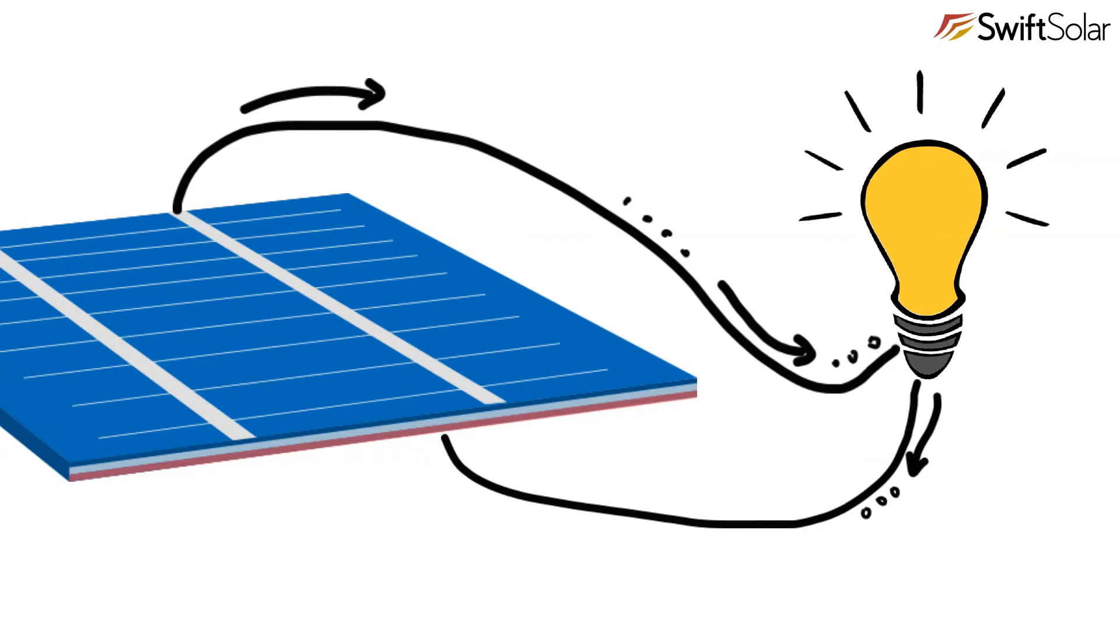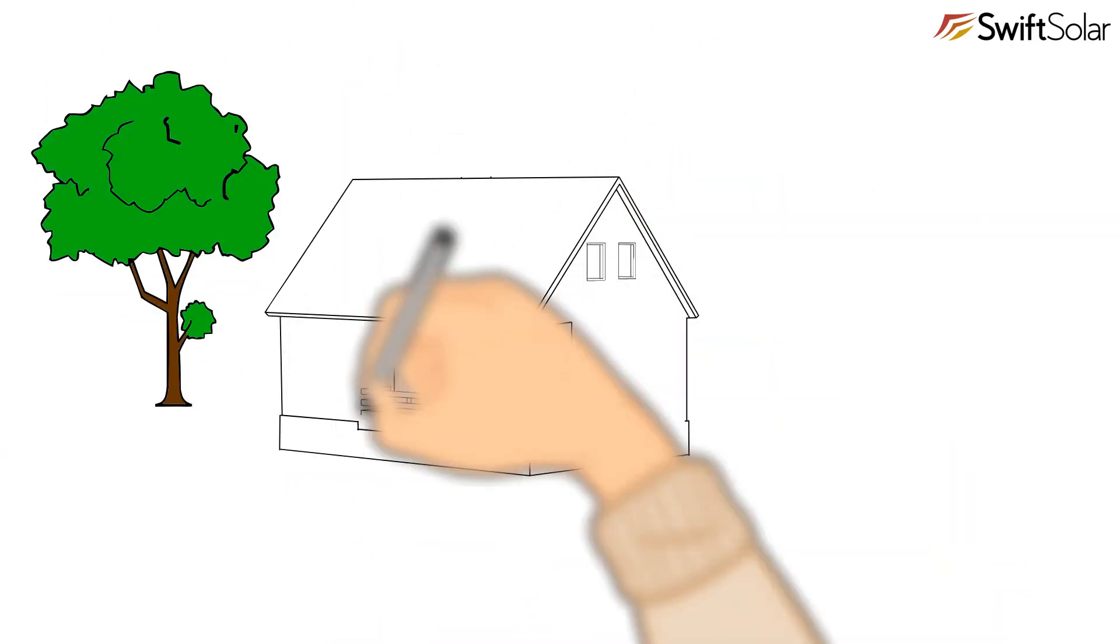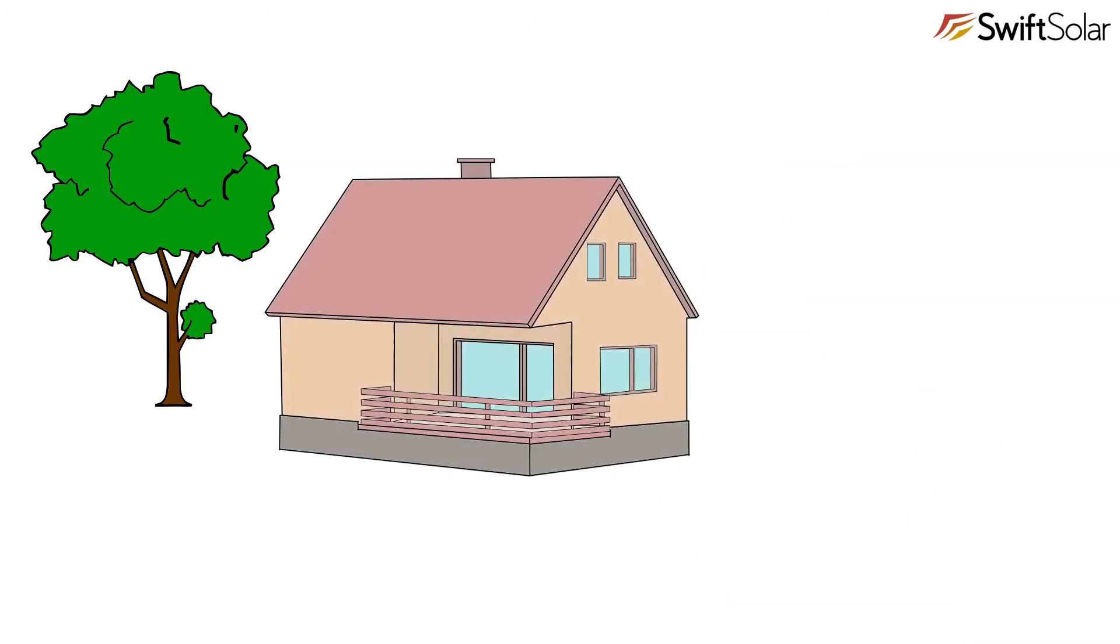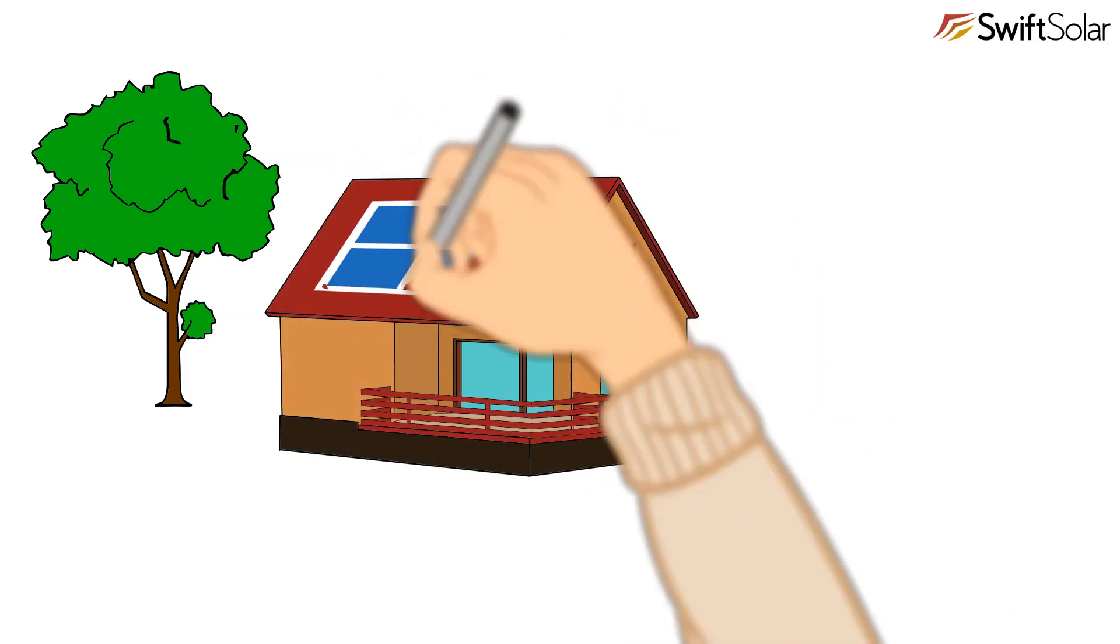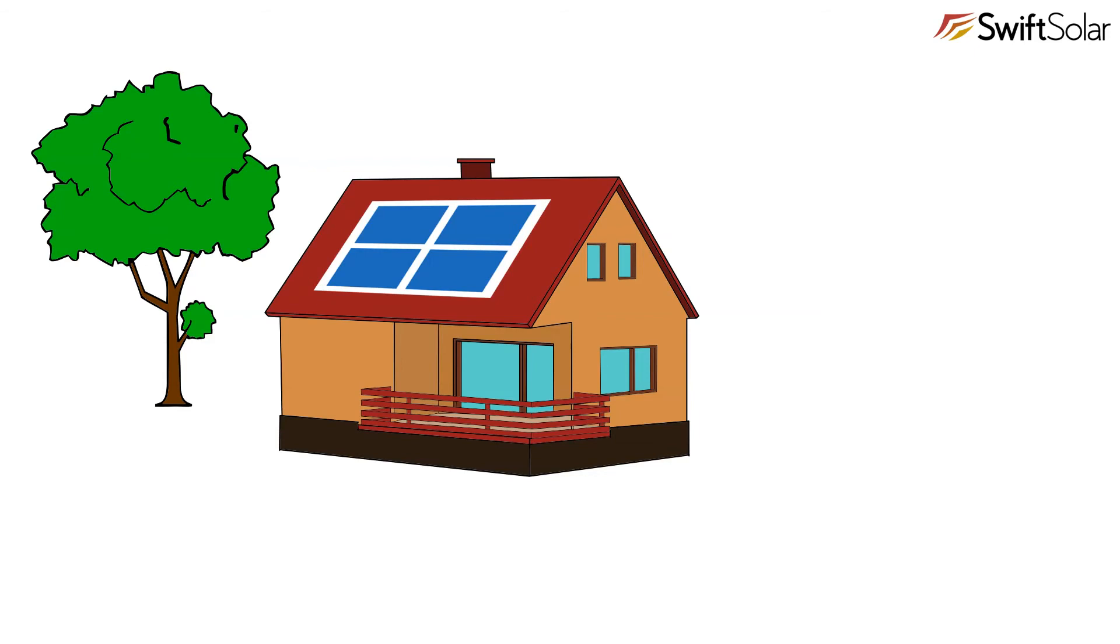One solar cell can't power much, but by connecting many cells in a panel, we can generate more electricity. Using many panels, we can power an entire house.